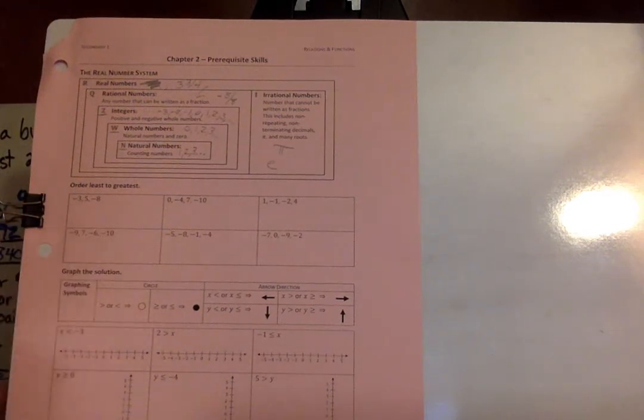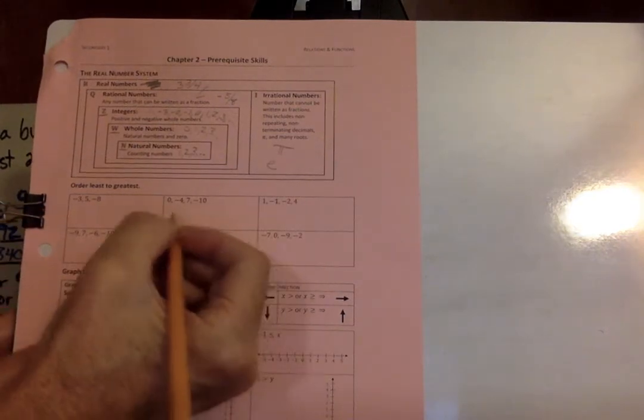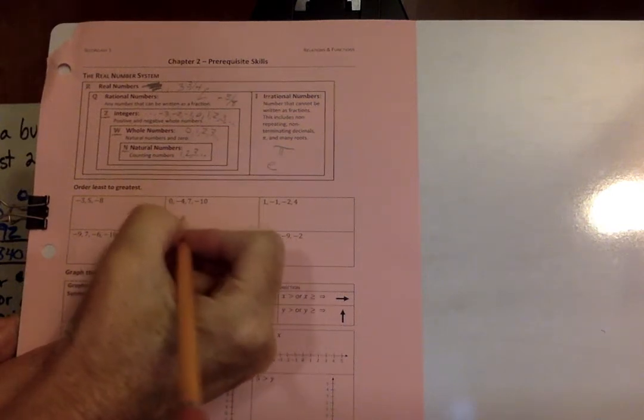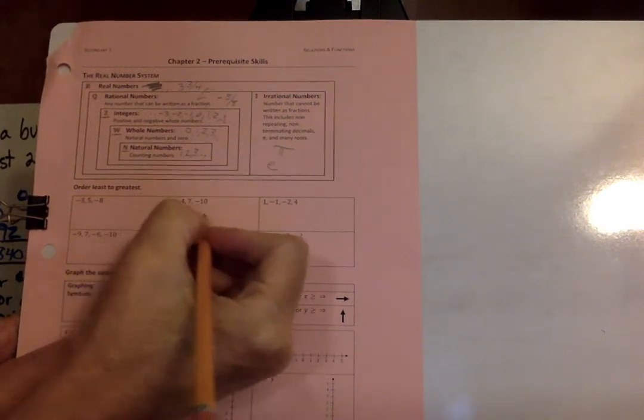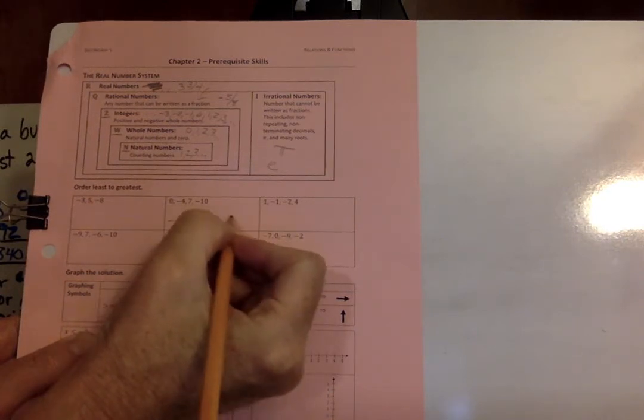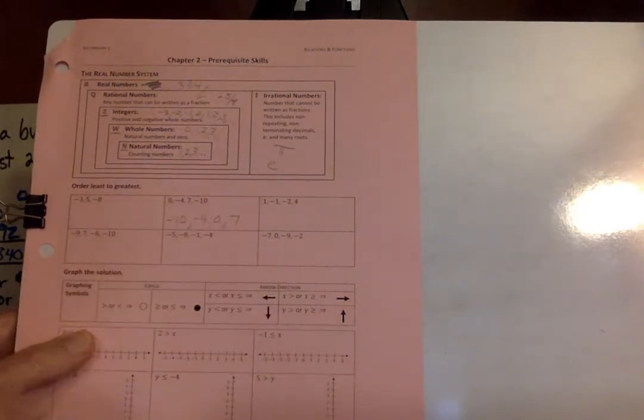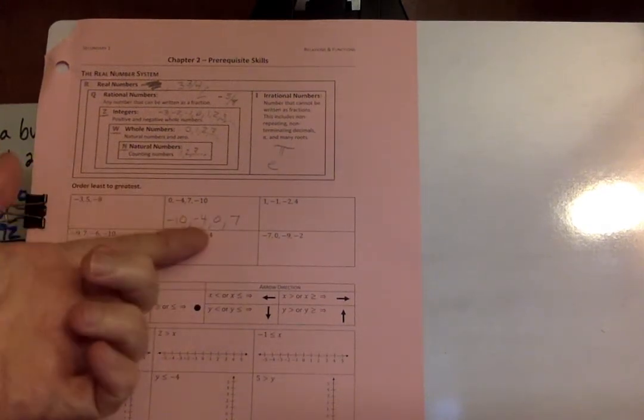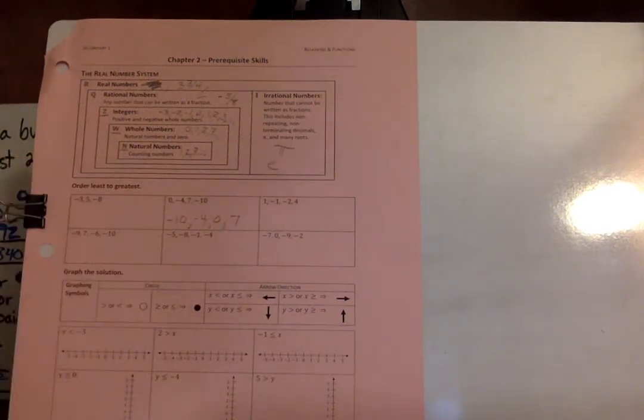Next section, order from least to greatest. So let's do this one. The least one is the biggest negative, that's negative 10. Then the next least negative, then 0, then 7. So again, pretty simple stuff. The biggest negative, least negative, 0, and then a positive number is going to be on the right of the negative numbers. And you can do the rest of those.